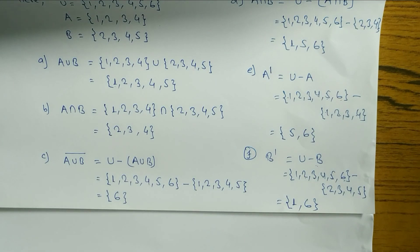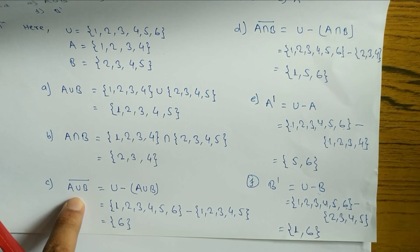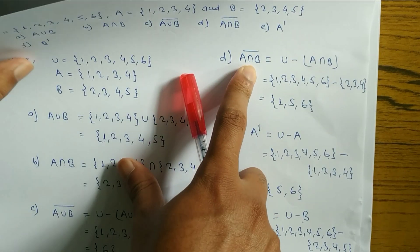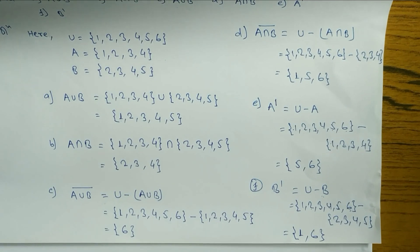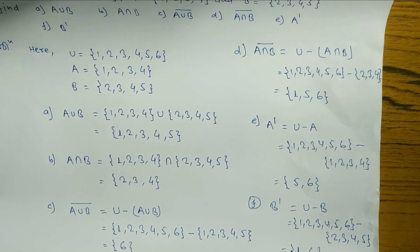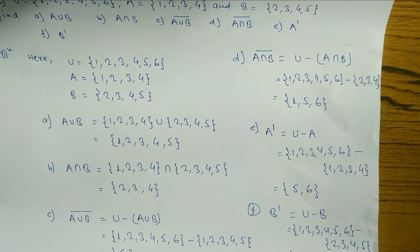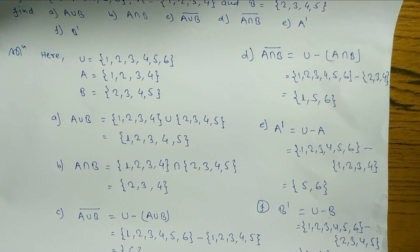Hope you understand all of this: how to find out A union B, A intersection B, (A union B) complement, (A intersection B) complement, A complement, and B complement. These are all very important for class 8, 9 in board examinations and for class 11 too. If you understood this video, please hit the like button and share with your friends. If you are new on my channel, don't forget to subscribe. Please keep supporting. Thank you.